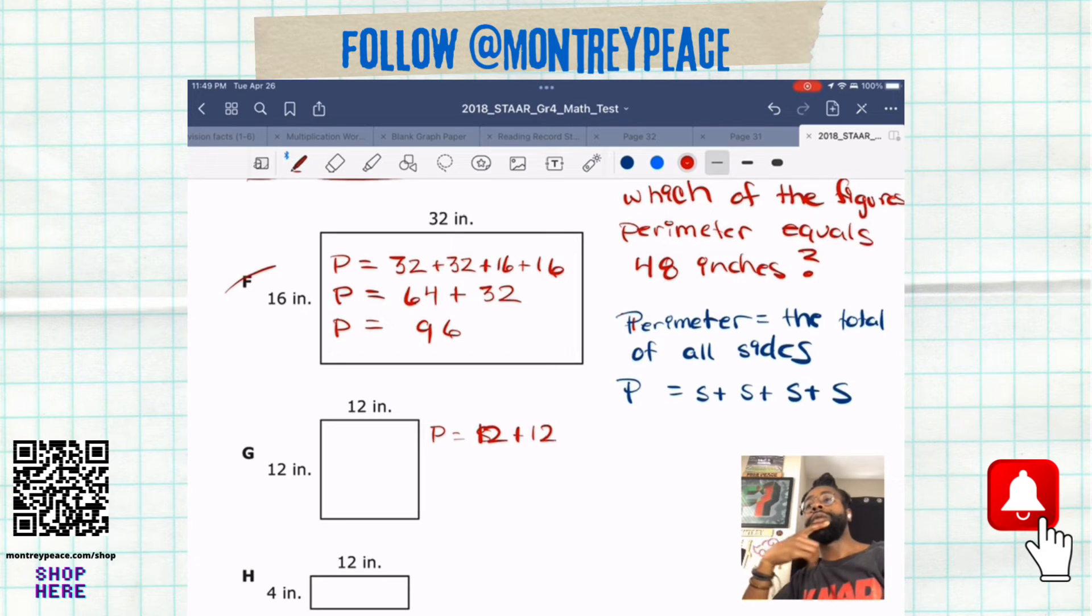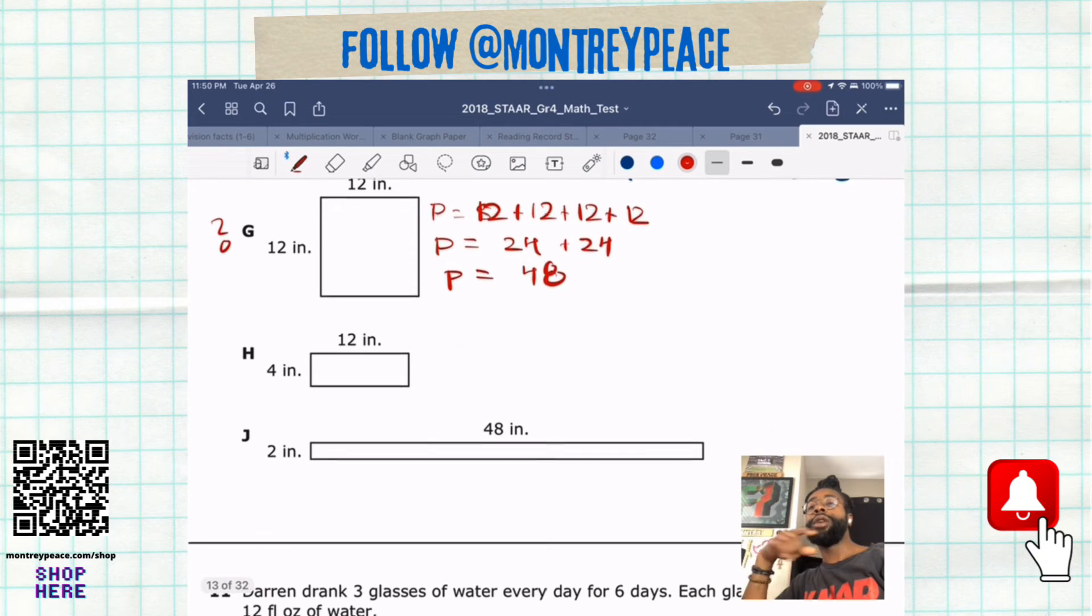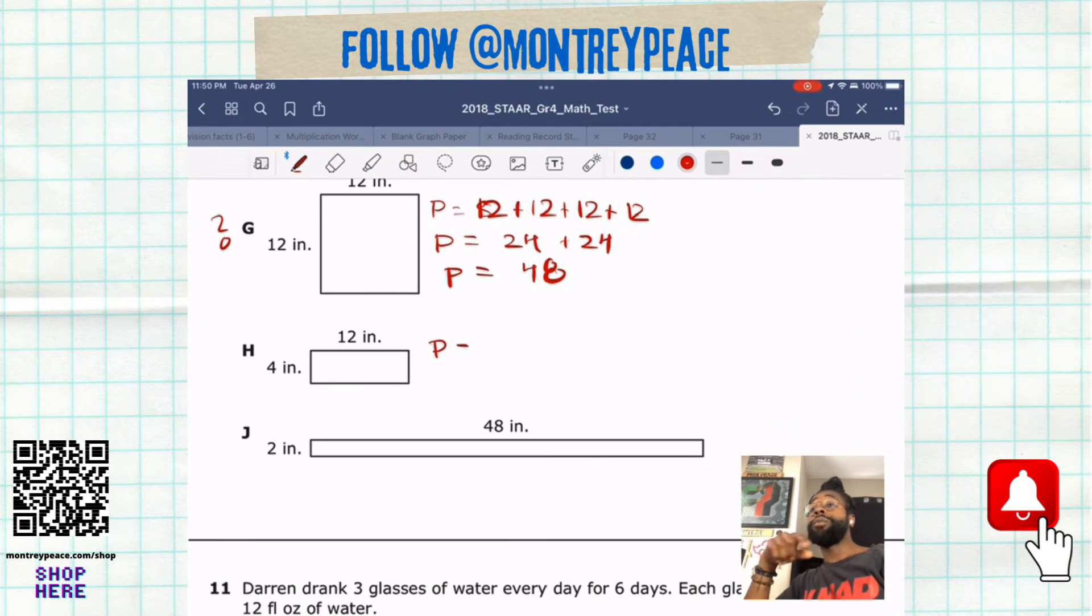Jumping down there, G is actually 12 all the way around, it's a square. 12 plus 12 plus 12 plus 12. Another way you could have did this is 12 times 4 if you didn't want to add them all up, and you still get 48. 12 and 12 is 24, 12 and 12 is 24, 48. So we're looking for 48, so we got to put a question mark. That's possibly our answer right there.